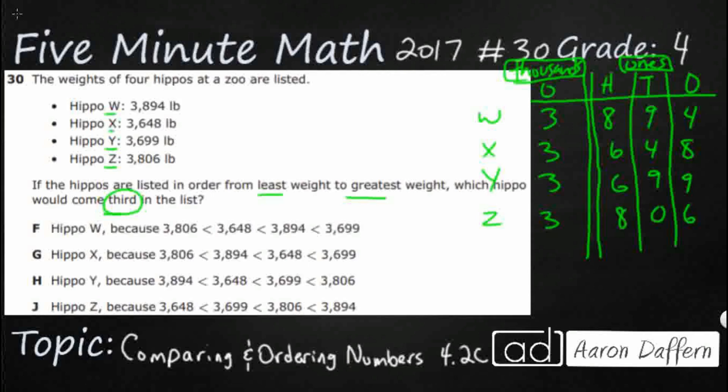When we are looking for the least, we're going to build our least to greatest order before we figure out what comes third. We start with the largest place value, which is the thousands spot. Since they all go to the same place value, this is where we begin. As you can see, every single one of these hippos has a three in the thousands spot, which means we can't figure anything out just by looking there, so we move to the next spot to the right.